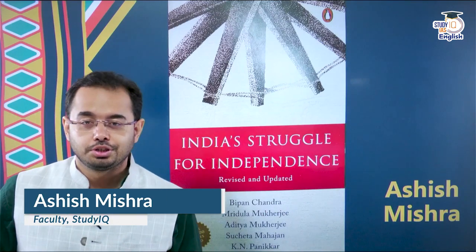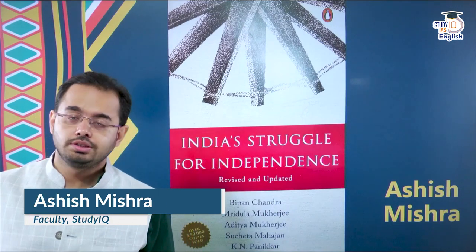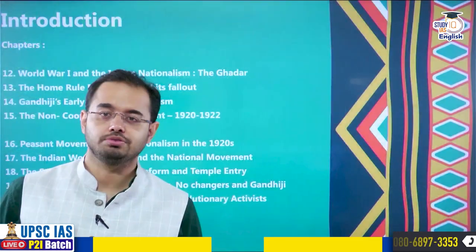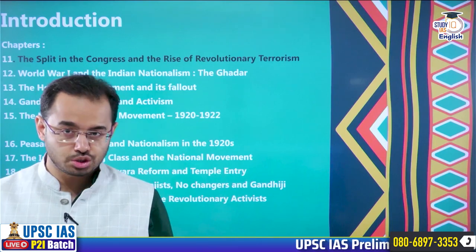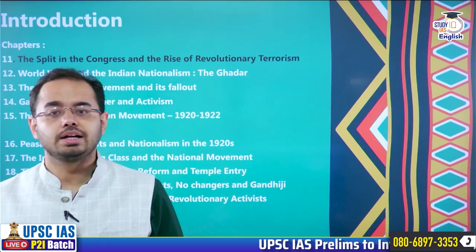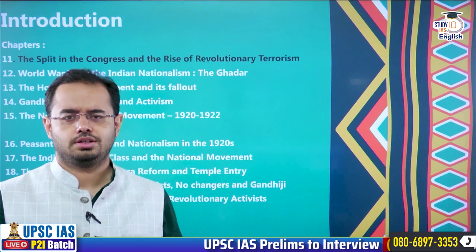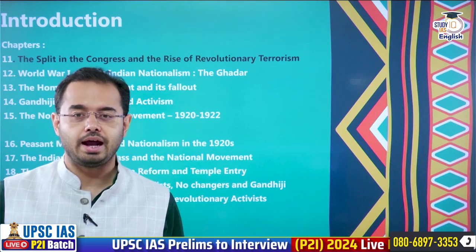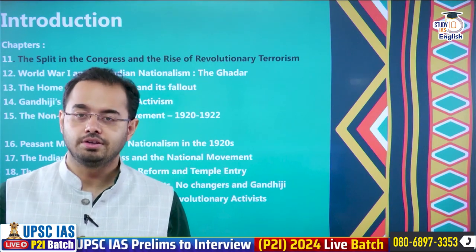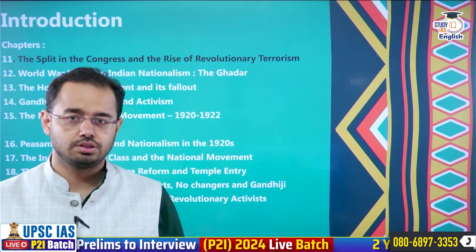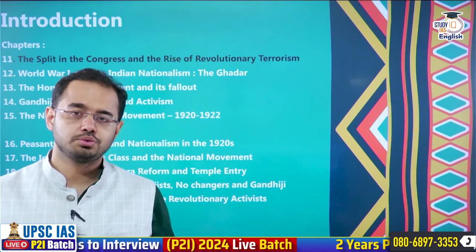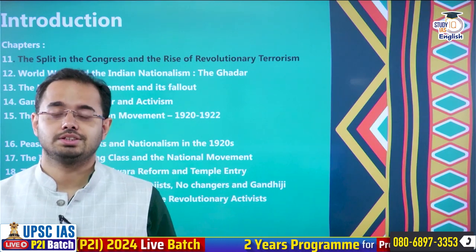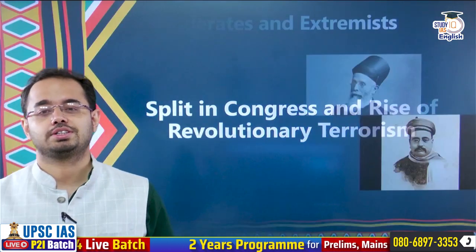Namaskar everybody, my name is Ashish and you're watching the series of Vipin Chandra's India Struggle for Independence. We are into a very exciting chapter — the chapter which tells you how the Congress was split open by the Britishers and what led India towards the ways of revolutionary activism. For the first time, we were seeing heroic acts done by young freedom movement specialists and nationalists from Bengal. These two important facets of Indian nationalism we shall hear and read diligently. Let us begin with the split in the Congress.